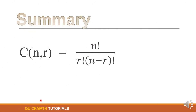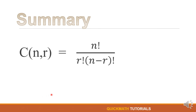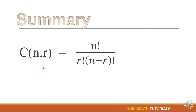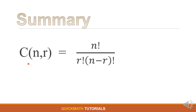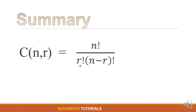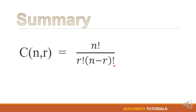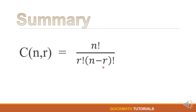To sum it up, combination determines the number of possible arrangements in a collection in which order does not matter. The formula is: the combination of n objects taken r at a time equals n factorial over r factorial times (n minus r) factorial, where n is greater than or equal to r and r is greater than or equal to 0.